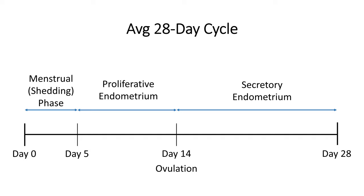Here is a simplified chart based on an average 28-day cycle. There is incredible variability between cycles in the same woman and especially between women in terms of cycle length. Most of that variability comes between day 0 and day 14. However, after ovulation on day 14, the time until the start of menses is usually about 14 days and stays somewhat consistent. We'll recognize three phases: the menstrual or shedding phase between day 0 and day 5, the proliferative endometrium between end of menses and ovulation, and the secretory endometrium during the luteal phase after ovulation.